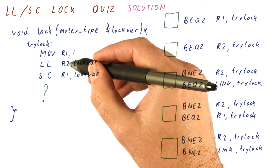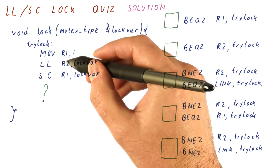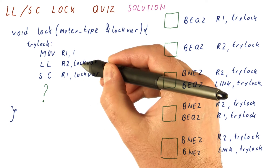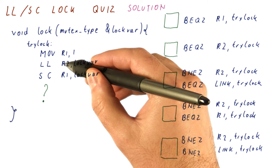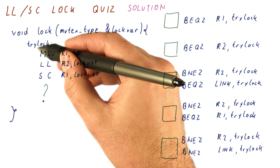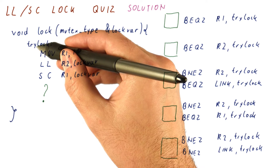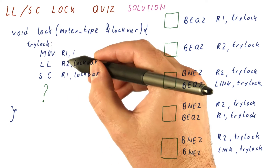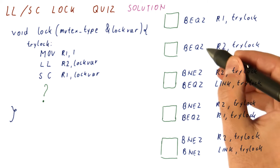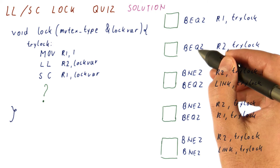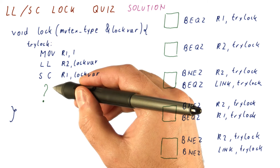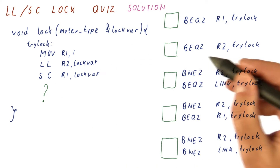There are two conditions that need to be checked. One is: did we actually see a lock that was free? The lock is free when we read a zero. In that case, we don't go back — we actually saw a lock that was free. If the lock was busy, we go back. So if R2 is zero, then we actually don't go back to try lock, meaning we are actually acquiring the lock successfully so far.